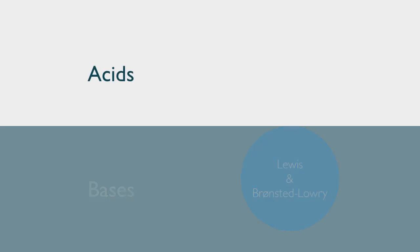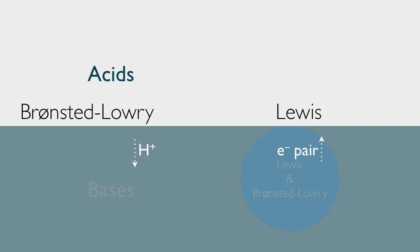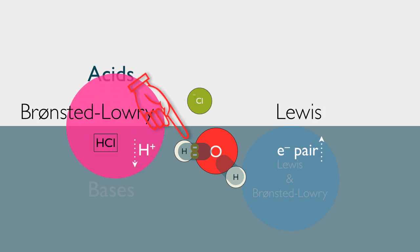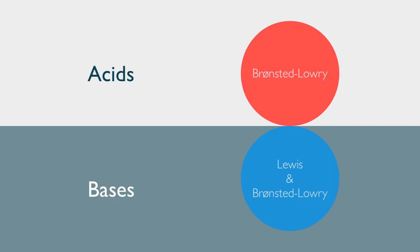But what about the acids? Bronsted-Lowry says that an acid must donate a proton, and Lewis says that an acid must accept an electron pair. There's our Bronsted-Lowry acid — hydrochloric acid donated the proton, so hydrochloric acid is a Bronsted-Lowry acid. And there's the electron pair that the hydrogen ion is accepting — the hydrogen ion came from the hydrochloric acid — so hydrochloric acid counts as a Lewis acid. For this reaction, it looks like the two groups completely overlap. Where, in fact, the Lewis acid group is actually bigger than the Bronsted-Lowry acid group.